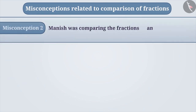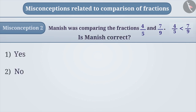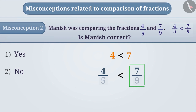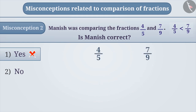Misconception 2. One day, Manish was comparing the fractions 4/5 and 7/9. According to him, the fraction 4/5 is smaller than 7/9. Is his answer correct? Sometimes denominators are ignored and it is understood that the fraction with the smaller numerator is smaller. Here, the numerator 4 is smaller than the numerator 7, so the fraction 4/5 is considered to be smaller than 7/9. This is incorrect.